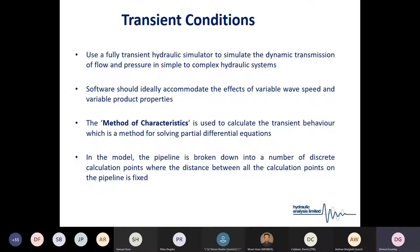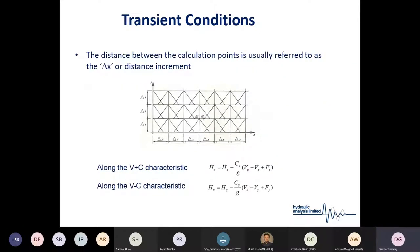Our software generally uses the method of characteristics. There are other softwares available that use other methods, however the method of characteristics is seen as the most accurate tool and is used to calculate transient behavior. It's a method of solving partial differential equations in which the pipeline is broken down into a number of discrete calculation points, where the distance between all calculation points on the pipeline is fixed.